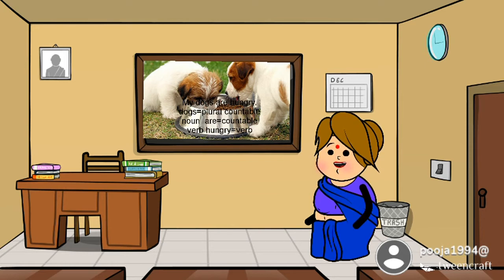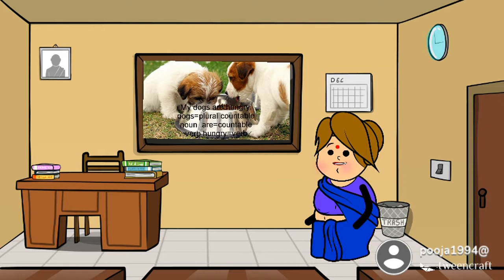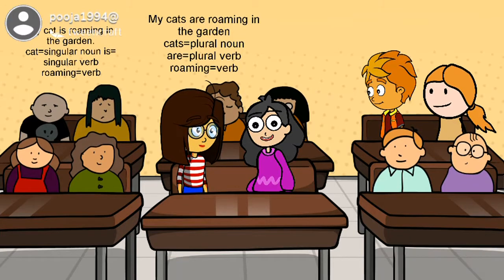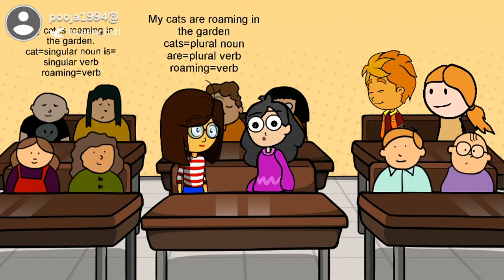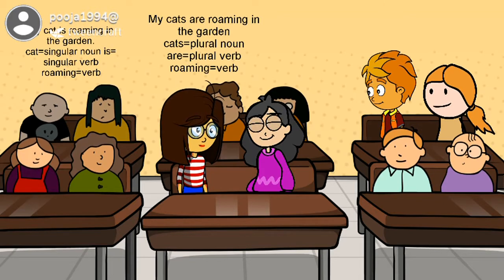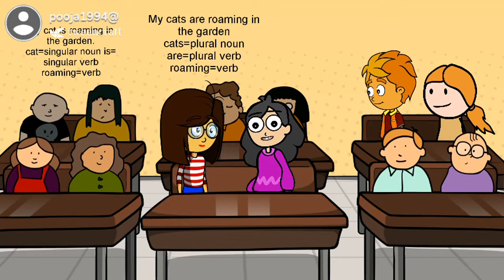Tell me, students, what you have understood till now — the difference between a singular countable noun and a plural countable noun. For example: 'my cat' — C-A-T — is a singular noun. 'My cat is roaming in the garden.' Here, 'is' is a singular verb, and 'roaming' is the verb.